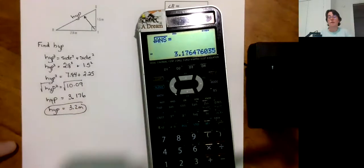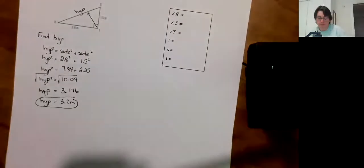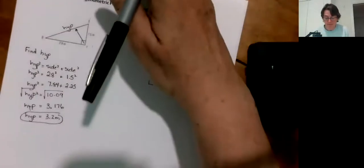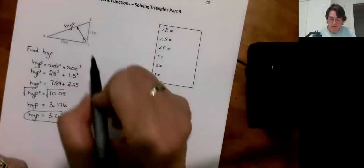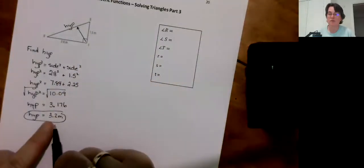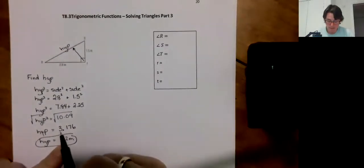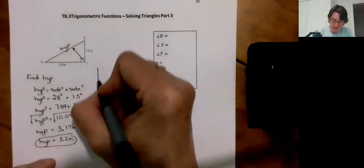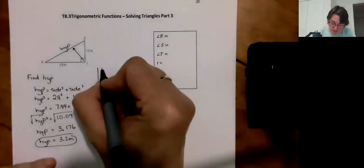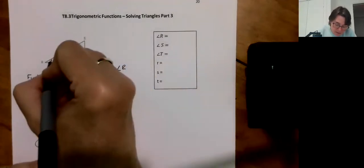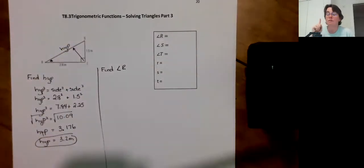All right, so that is my third side. Now, paranoid mathematician here. When I go to do these ones, I don't want to use the hypotenuse. I don't want to use hypotenuse because for one thing, we rounded. And I don't want to keep that error with me. So let's say we're going to find angle R. So this is the one I want. So now I'm finding an angle so I can use my trig functions.